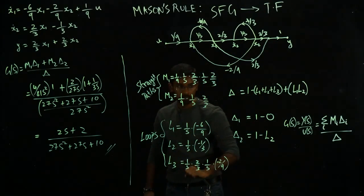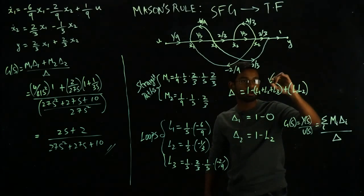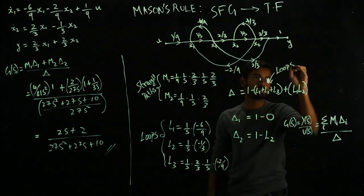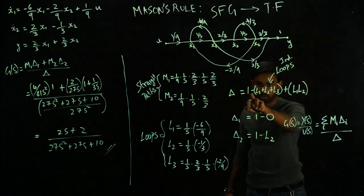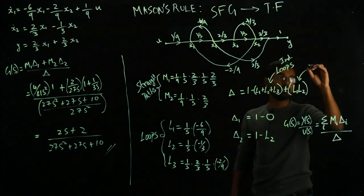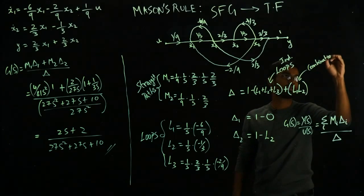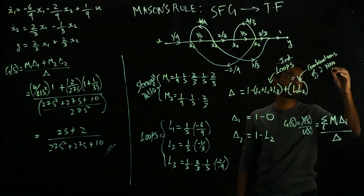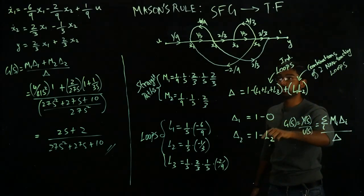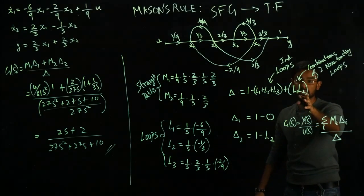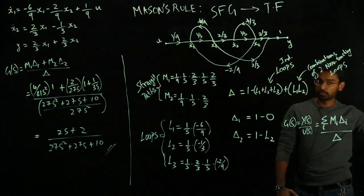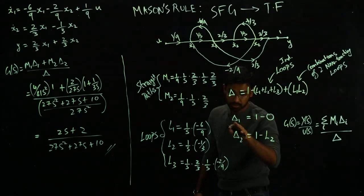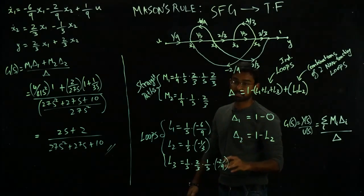So once we had that, we had to define a set of variables that we needed in order to use the Mason's rule. So what did we need? We need straight paths, how many straight paths we had, we computed that. And remember, while computing all this, it's simply multiplying through the gains. And then we talked about loops, how many loops we had, we listed them. And then we went to delta. Here, these loops are all the individual loops. And in this guy, I'm just going to add all the individual loops and note the minus sign here plus combinations of two non-touching loops.